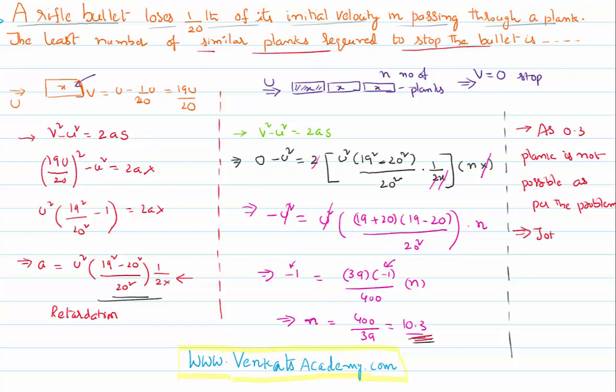I cannot use only 10 planks because it is still going to have some velocity. The total number of planks required is 11. Instead of that 0.3, I have to use a complete plank. So you need 11 identical planks to stop that bullet completely.